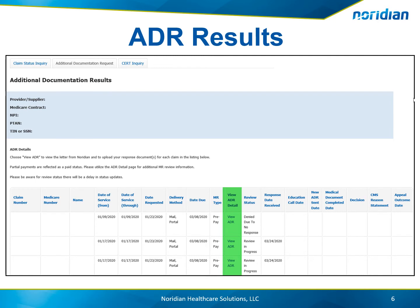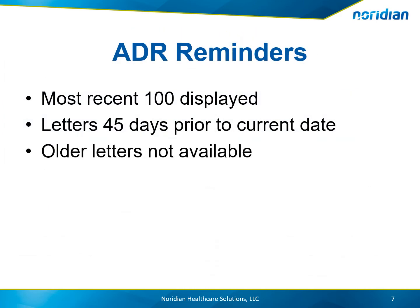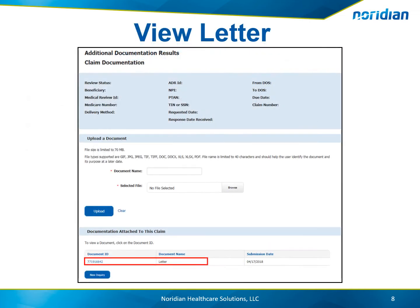To view the ADR letter and to upload supporting documentation, choose the View ADR link. The portal will display the most recent 100 claims that have had an ADR sent. Due to limitations, letters may only be viewed 45 days prior to the current date. To view the original ADR letter that Neridian sent, choose the document ID under the documentation attached to this claim table for the document name: Letter. This letter will contain the claim information and a description of the documentation needed, and is a copy of the letter that Neridian would send in the mail.